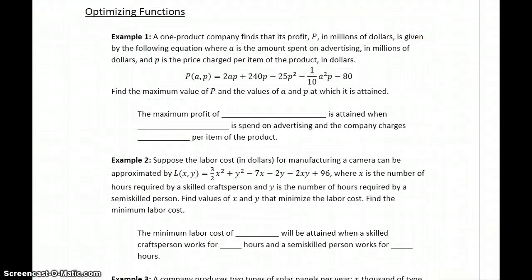So now what we need to do is just translate this into an interpretation for the problem, keeping in mind that our profit P is in millions of dollars. So that means our maximum profit of 545 is actually 545 million. So a maximum profit of 545 million is obtained when $10 million, since that value is also in millions, is spent on advertising, and the company charges, in this case, P is just the price charged, so the 5 is just $5.